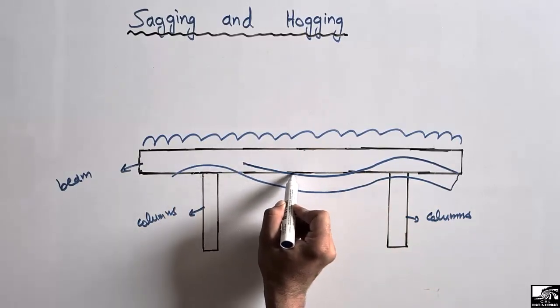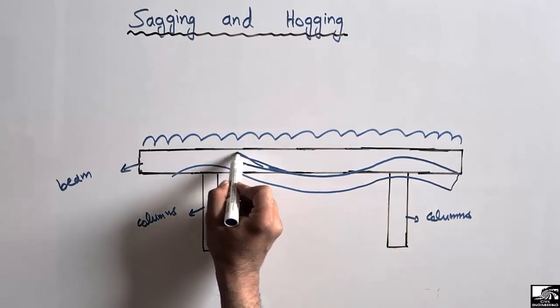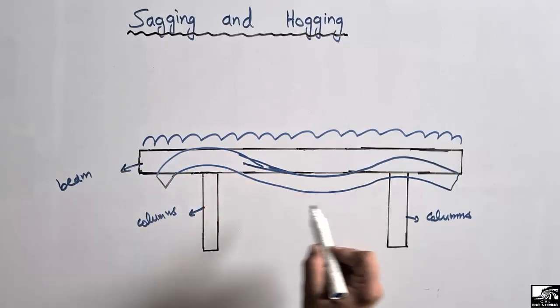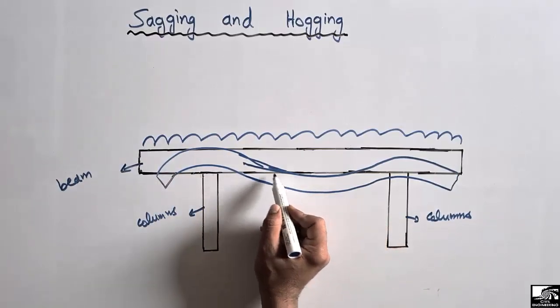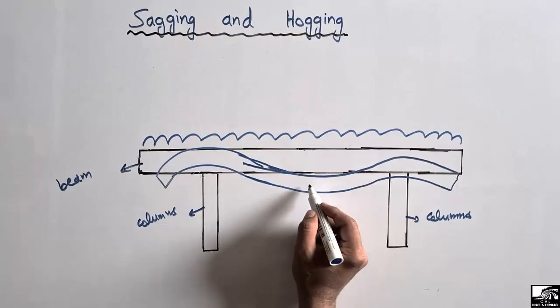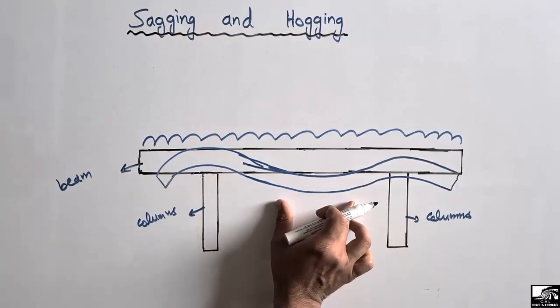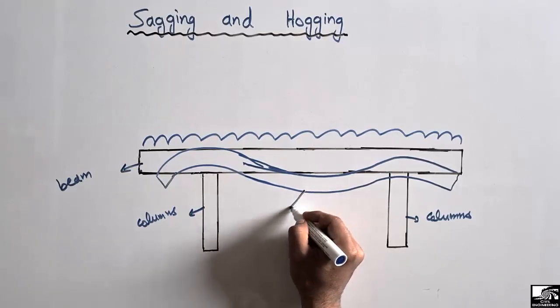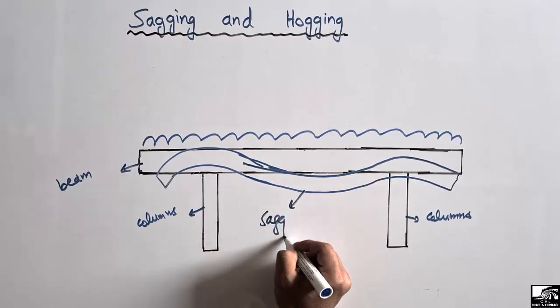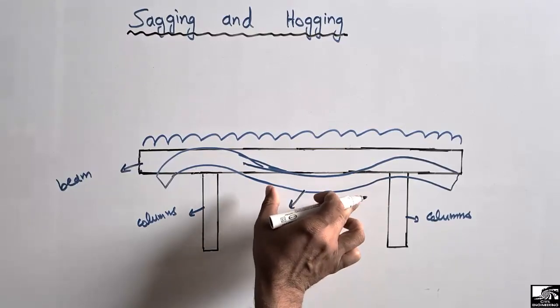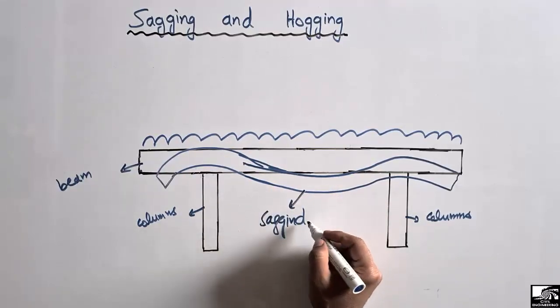This is the graphical representation of the bending of the beam. The beam will bend in downward direction in the middle. This downward bending is known as sagging, because the beam bends in downward position.